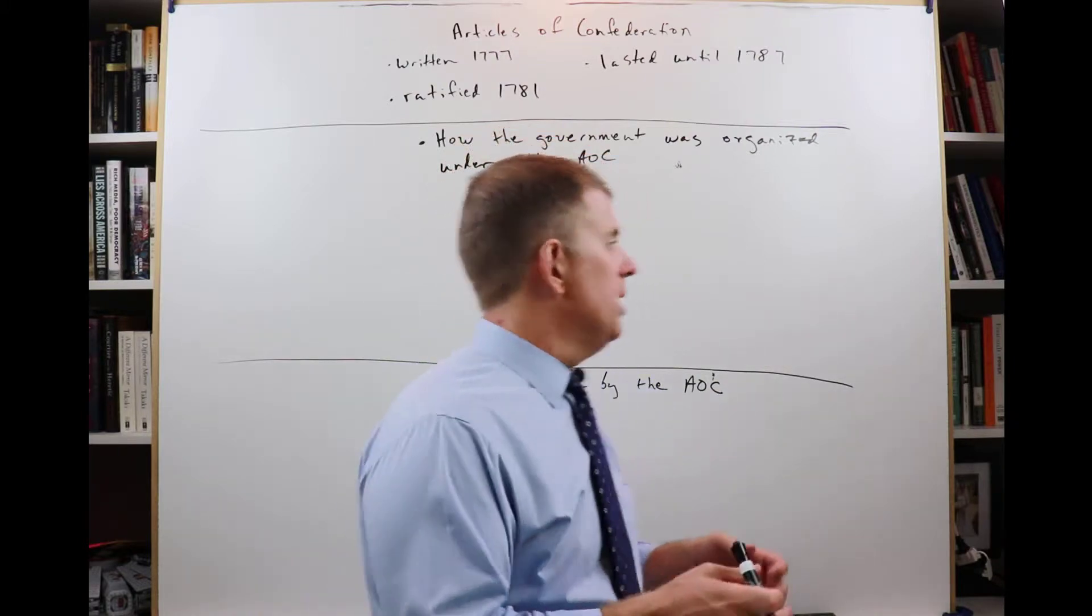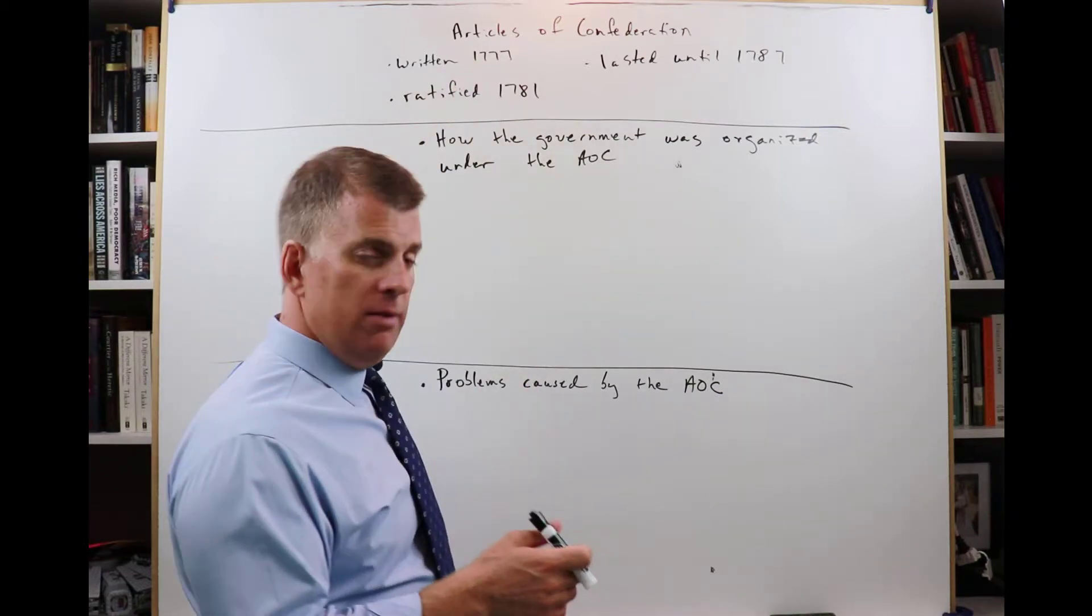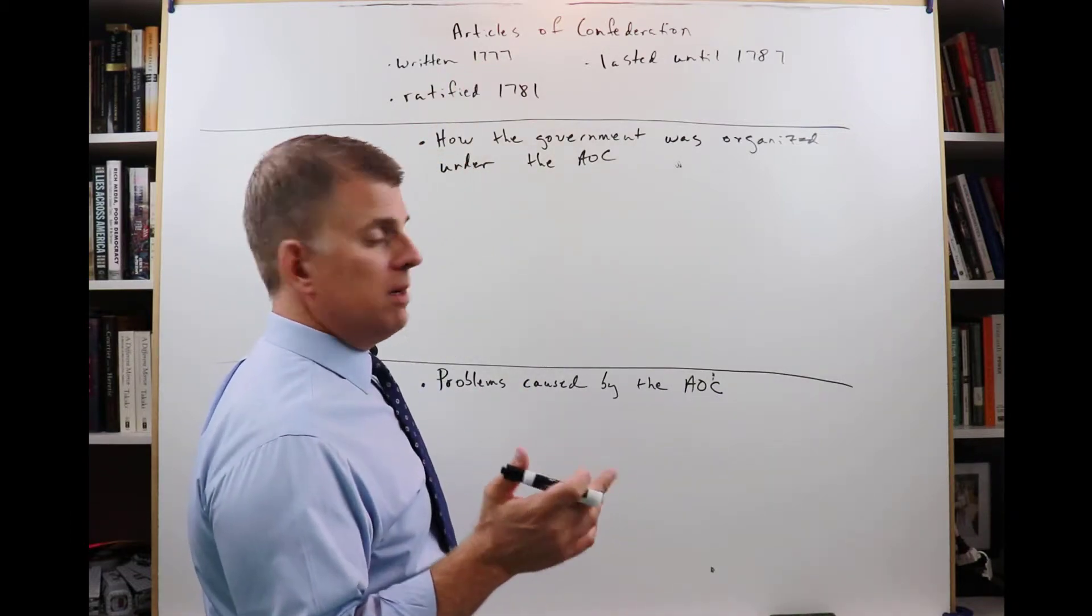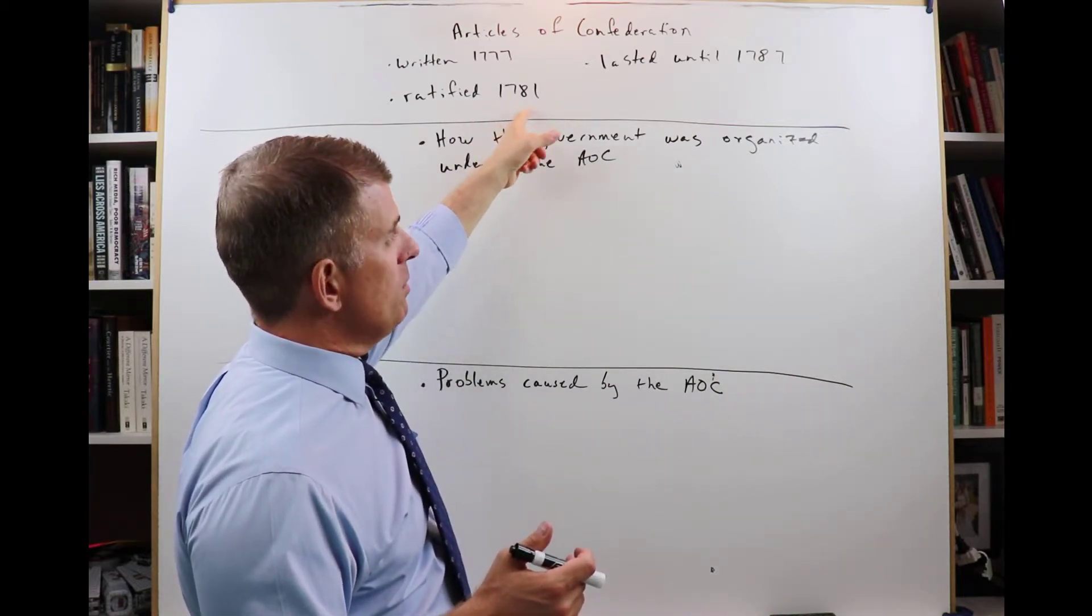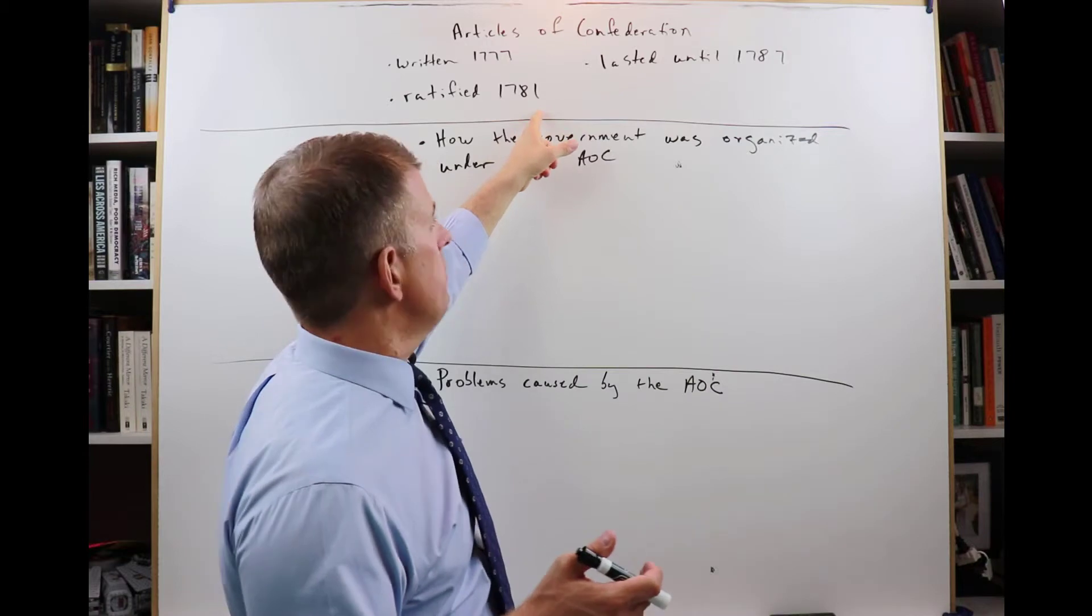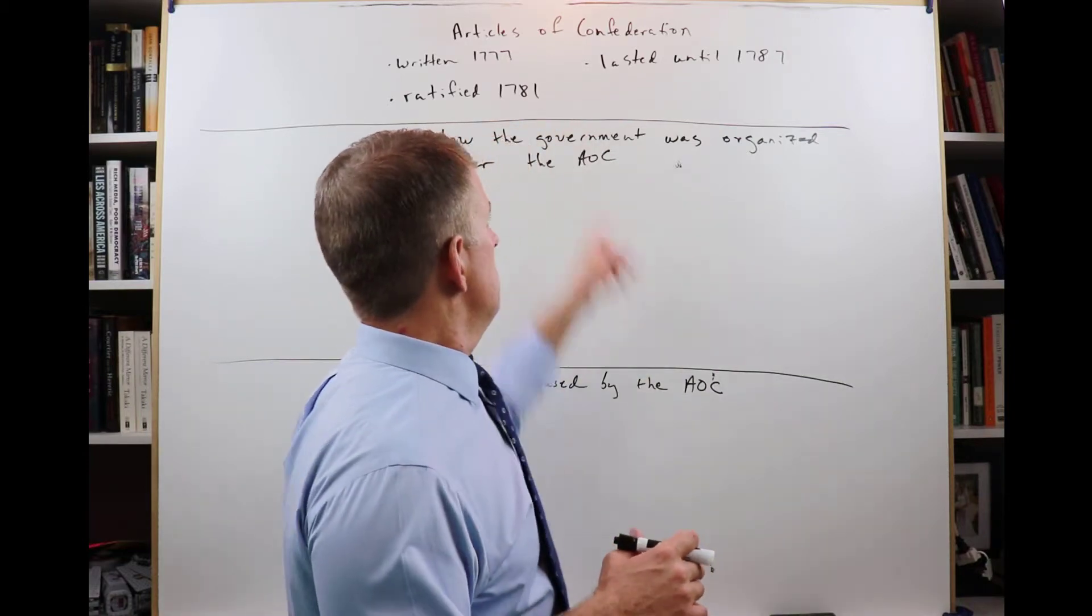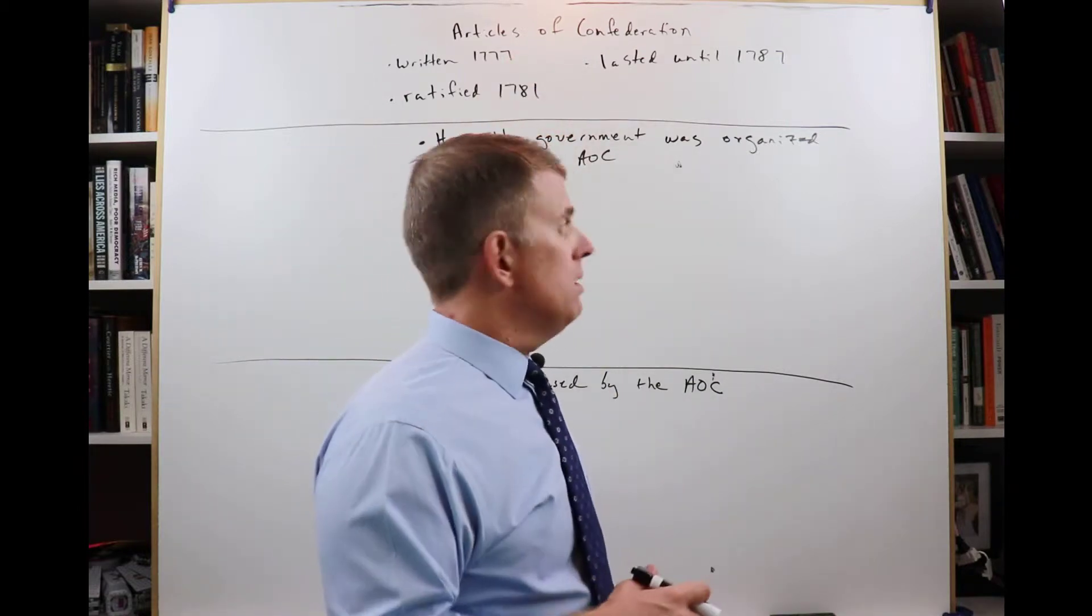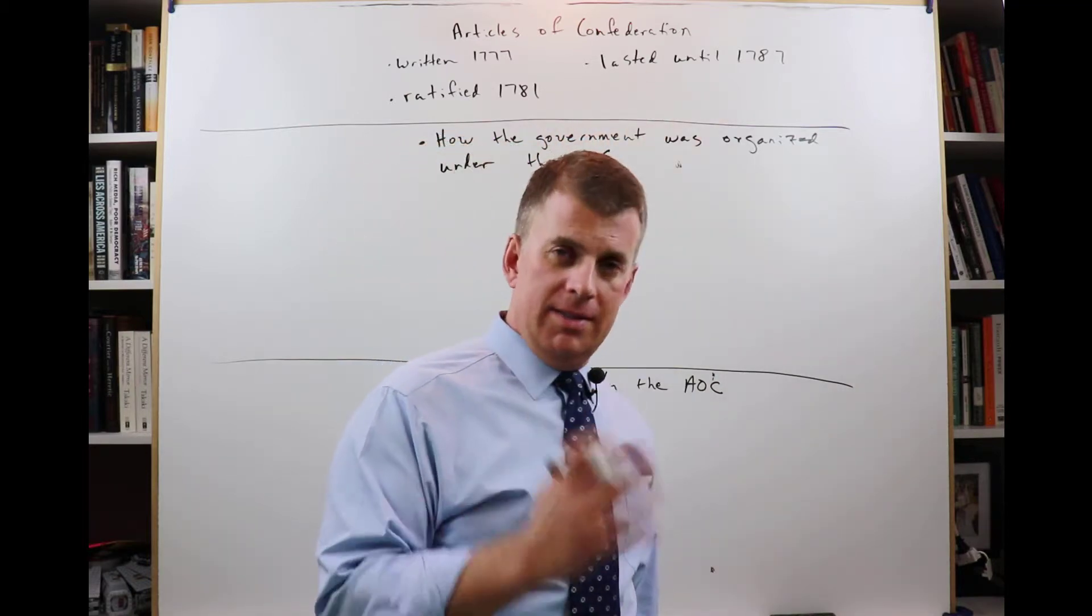They formed the Articles of Confederation, written in 1777 by the Continental Congress and ratified in 1781. That was before Yorktown, two years before the Treaty of Paris. They were under the Articles of Confederation even before the war ended, and that lasted until 1787.